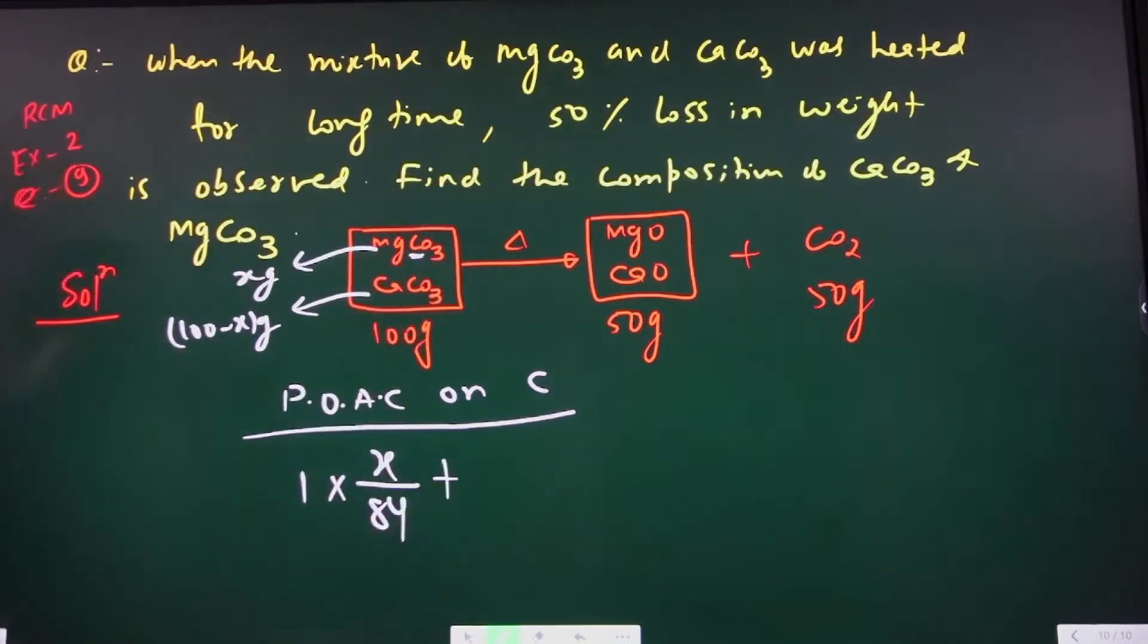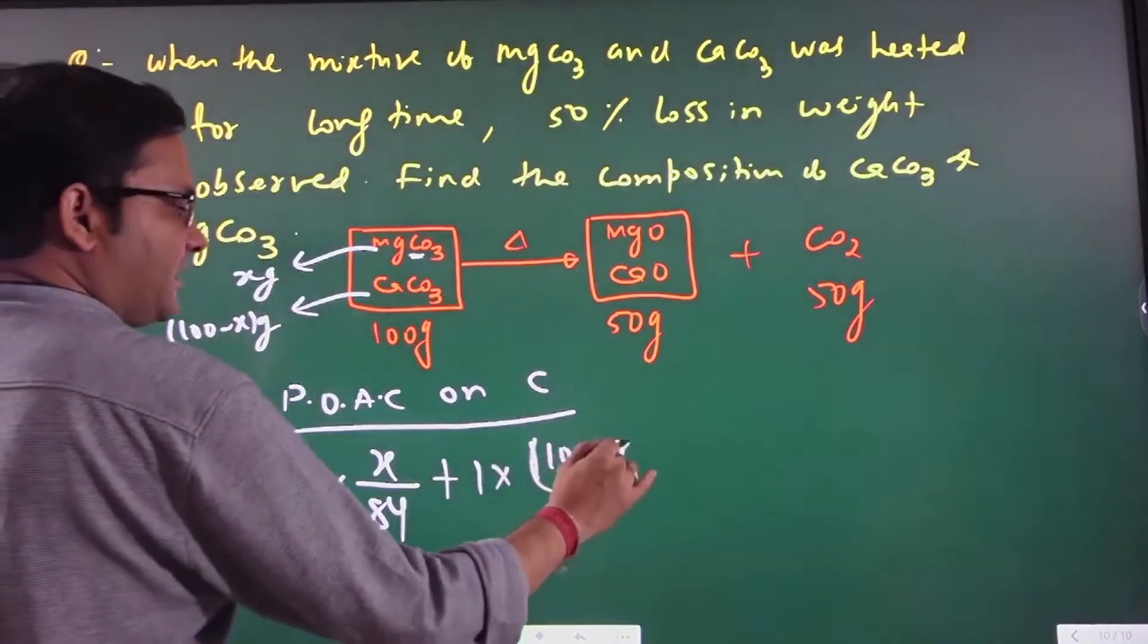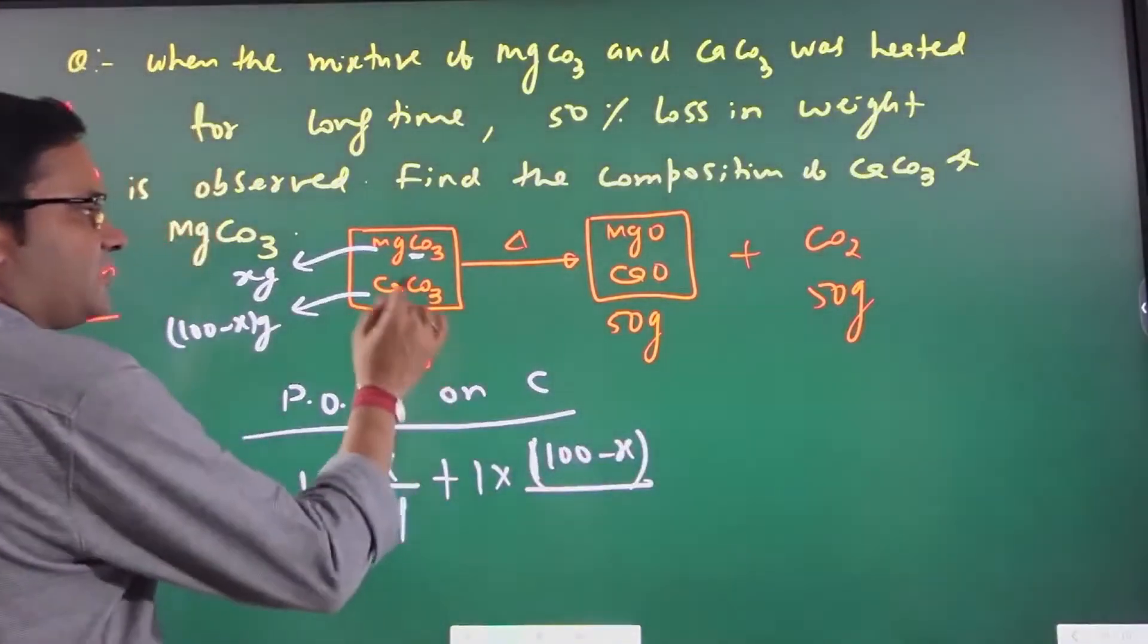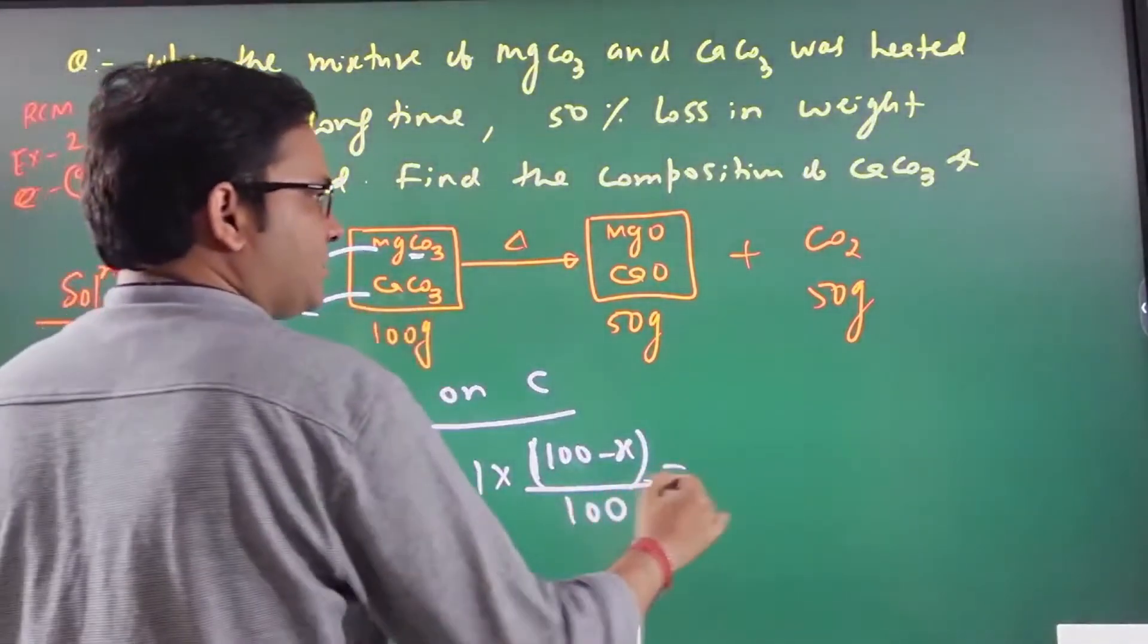That's 84, plus here carbon coefficient is 1 into 100 minus x divided by the molecular mass of CaCO3, which is 100. This equals what?